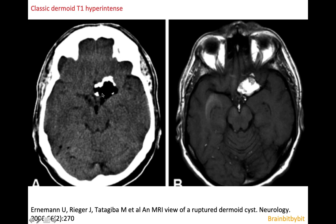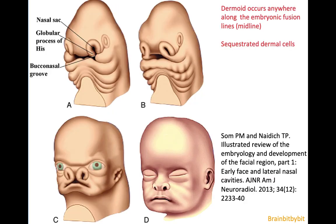The predilection along the midline has to do with the pathogenesis. It is thought that dermoid cysts arise from sequestrated skin cells that end up in the subcutaneous tissue during embryonic fusion, between the third and the fifth gestational week. These sequestrated ectopic skin cells in the subcutaneous tissue give rise to the dermoid cysts.